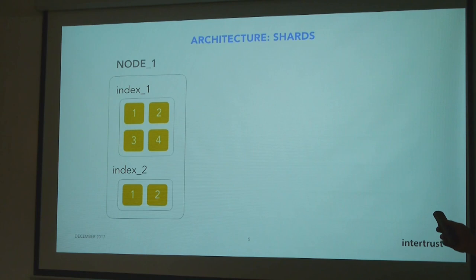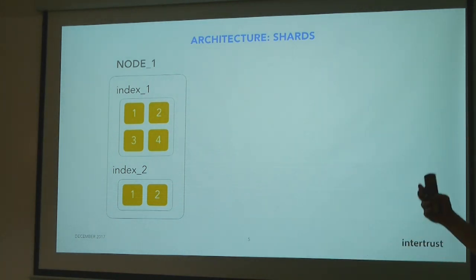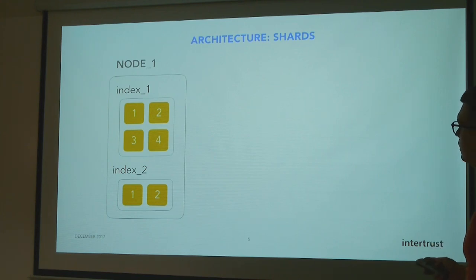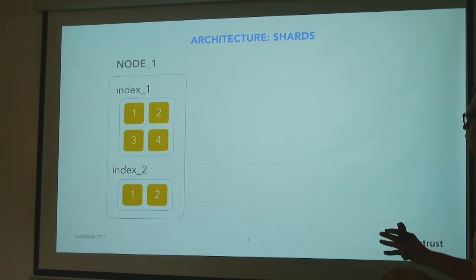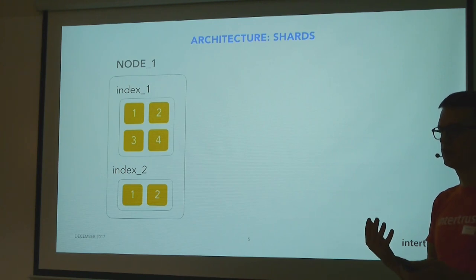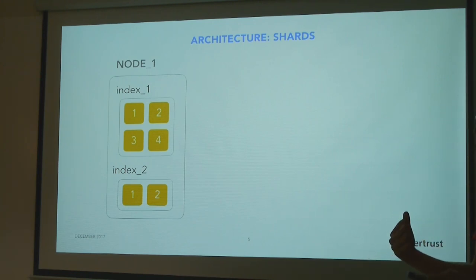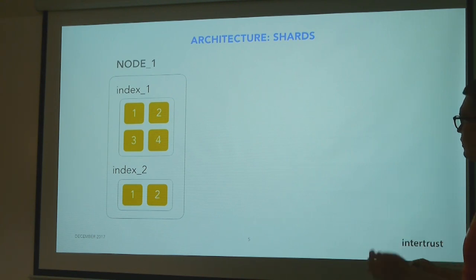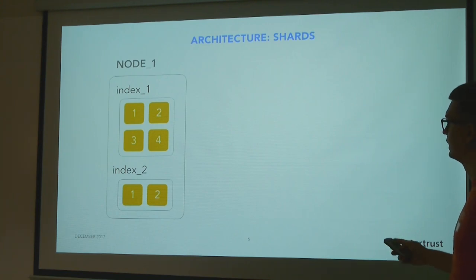Let's move to how Elasticsearch actually works. An Elasticsearch cluster consists of nodes. Let's say we have one node with two indexes — index one split into four shards and index two into two shards. An important thing about shards: you must define the number of shards when you create the index, and once created, the number is fixed. This is because Elasticsearch determines which shard a document belongs to based on its ID. If you changed the number of shards, that logic would change and documents would effectively disappear.